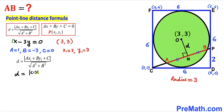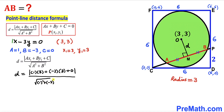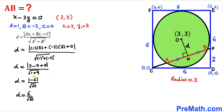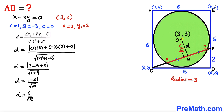Plugging in all values: distance d equals the absolute value of (1·3 + (−3)·3 + 0) divided by the square root of (1² + (−3)²). Simplifying, the numerator is |3 − 9| = |−6| = 6, and the denominator is √10. Therefore distance d, which is the length OM, equals 6 divided by √10.